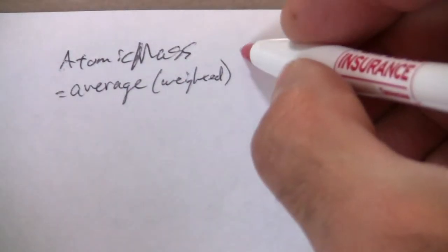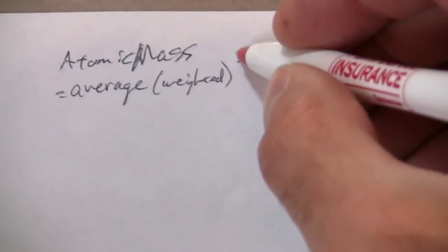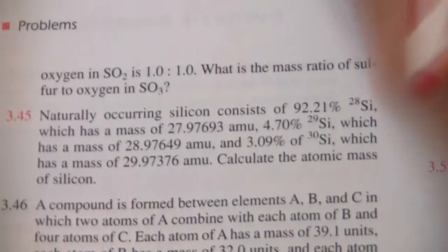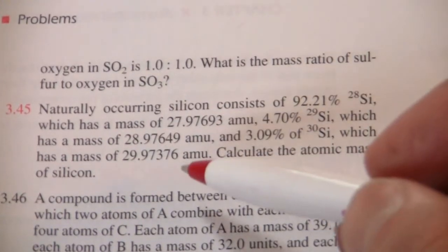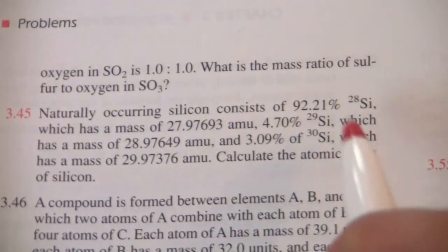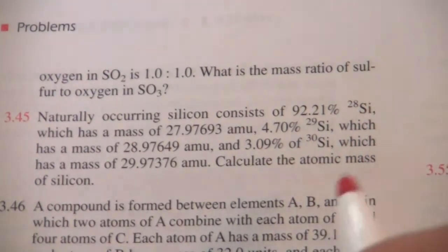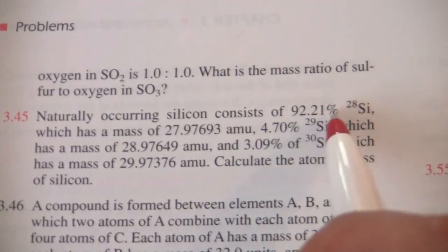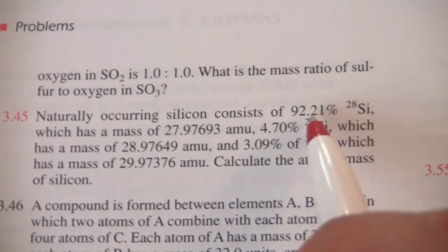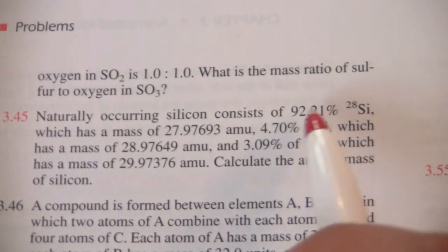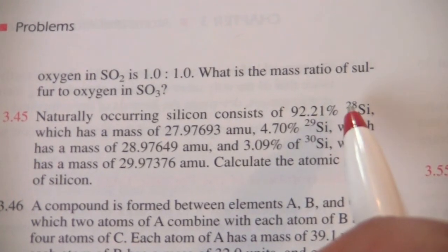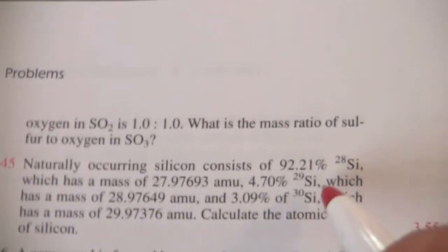So that atomic mass, which is given on the periodic table, but we're calculating it. And it is based, what's given on the periodic table is based on information just like this. The masses of the specific isotopes that occur naturally, and then the percentage of the atoms that are each of those isotopes. So 90% of the atoms of silicon on the earth are silicon-28, 92%.